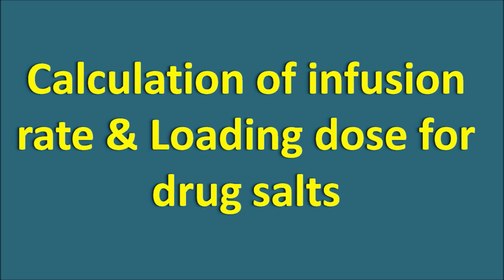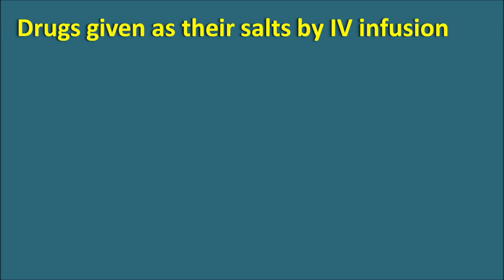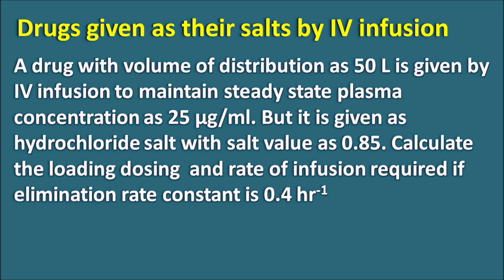For example, esmolol is a beta blocker which is short acting and given by IV infusion. Similarly, adenosine is a fast-acting anti-arrhythmic agent used to terminate supraventricular tachycardia, and procainamide is given by IV infusion to treat atrial fibrillation. Today, let us discuss how to calculate the infusion rate and loading dose for drug salts given by IV infusion.